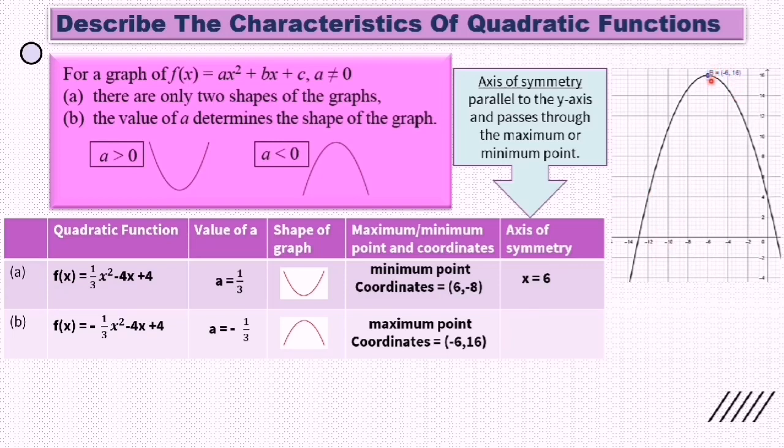We draw a line passing through the maximum point. Then we can get the axis of symmetry is x = -6.